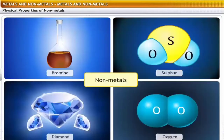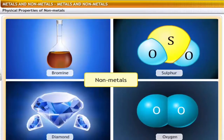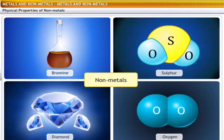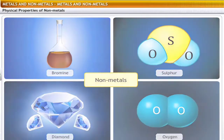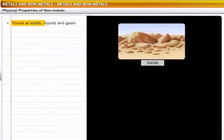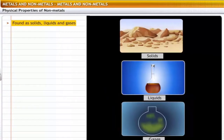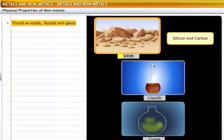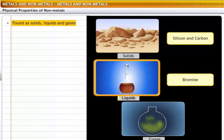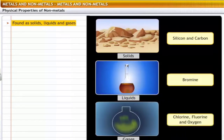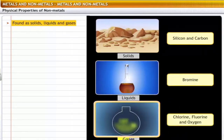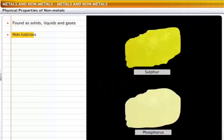Non-metals show properties unlike metals — they don't possess metallic properties. Non-metals exist as solids, liquids and gases. For example, silicon and carbon are solids, bromine is a liquid, and chlorine, fluorine and oxygen are gases. Non-metals are non-lustrous — they have a dull appearance. For example, the surfaces of sulfur and phosphorus do not shine.